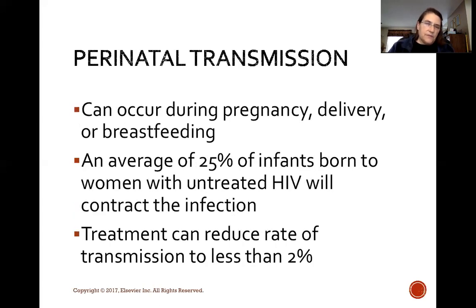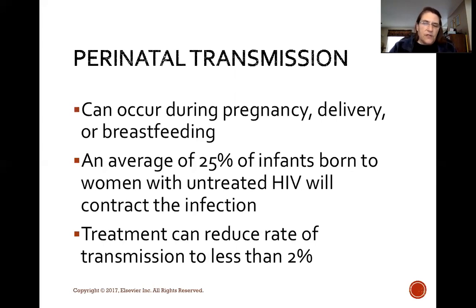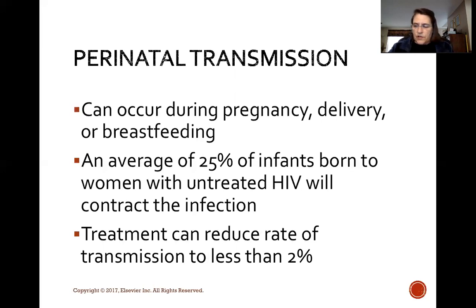Perinatal transmission can occur during pregnancy, delivery, or breastfeeding. An average of 25 percent of infants born to women with untreated HIV will contract the infection. However, if the mother receives treatment, that rate can be reduced to less than two percent. This is important to know.